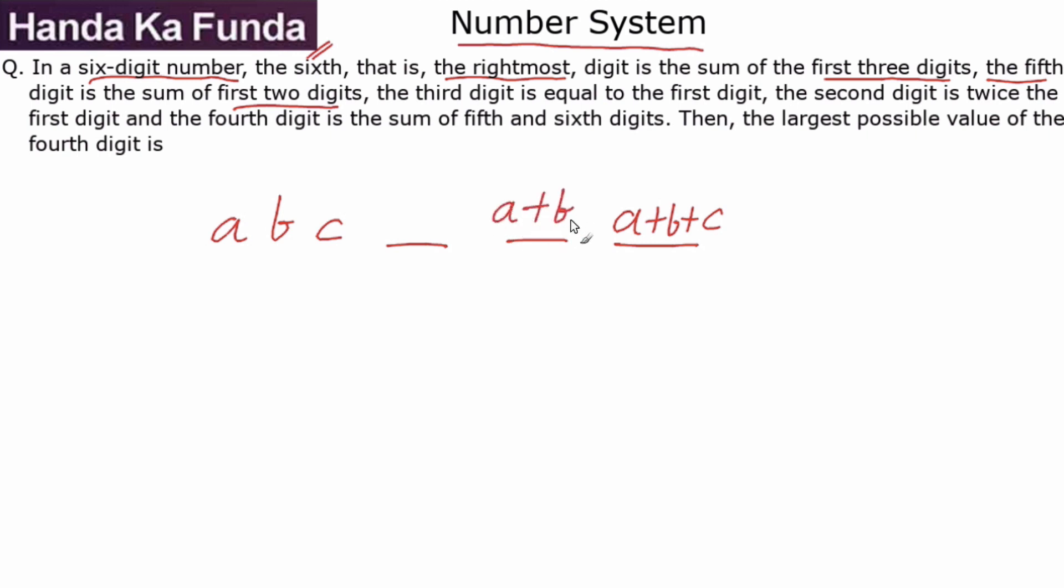The third digit is equal to the first digit, which means this is not C but this is A again. So I can rewrite this as A again.